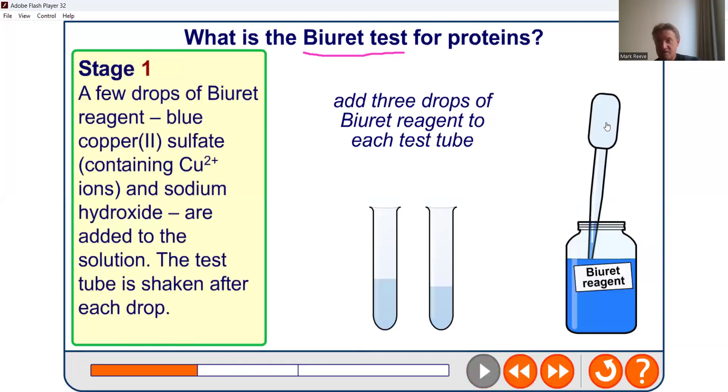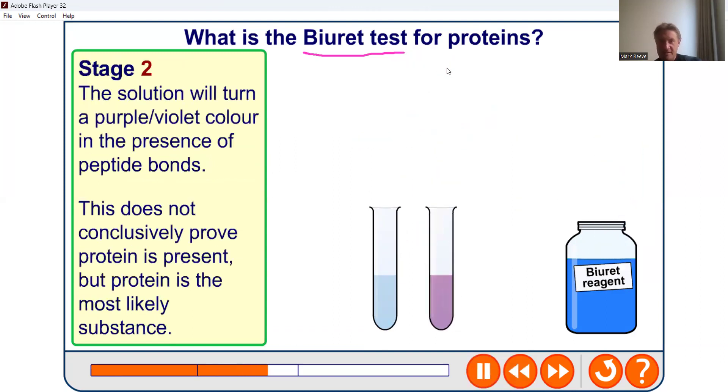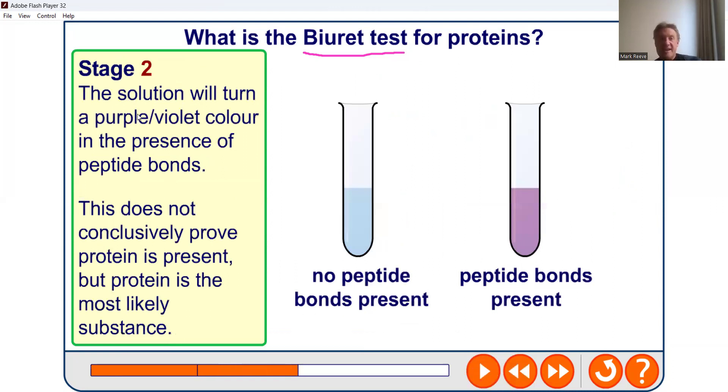But anyway, we'll have a look and see what happens. So we're going to add some Biuret reagent to each of these test tubes. Get a bit more than that, and we'll add some more.